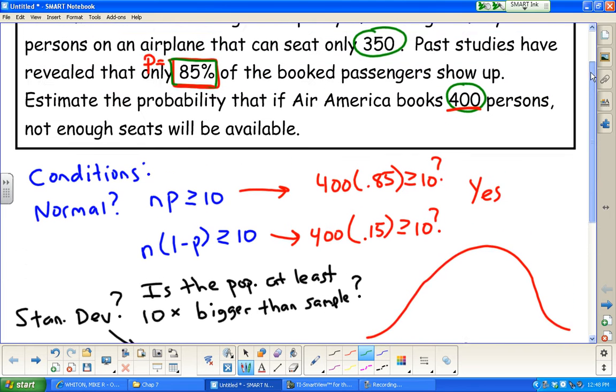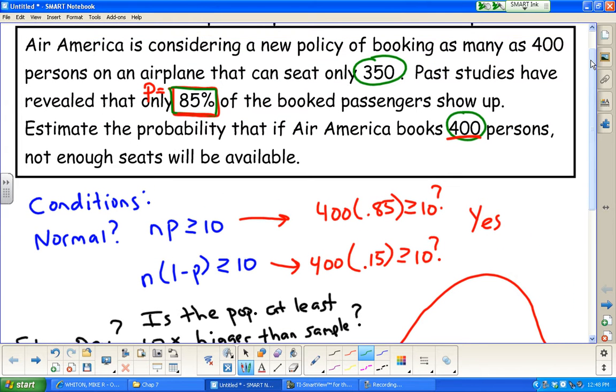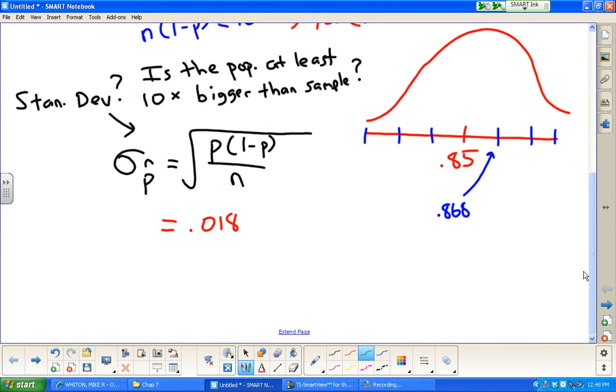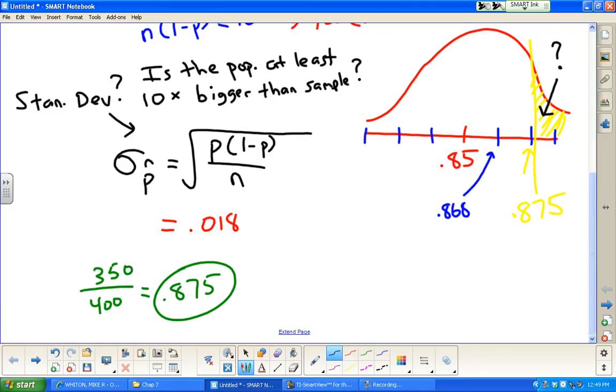Our question: how likely is it that we're going to get more than 350 people show up? 350 out of the 400, that's going to be a problem. That's overbooked. As a decimal, that's 0.875. So if the proportion in our sample is higher than that, we're overbooked. So 0.875, let's show where that is on our curve here. It's going to be somewhere out past this one. It's not exactly at the standard deviation line, but our drawing doesn't have to be perfect. What we want to do is figure out what's the probability of that yellow shaded portion.